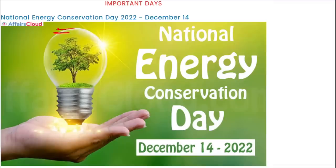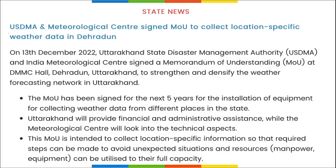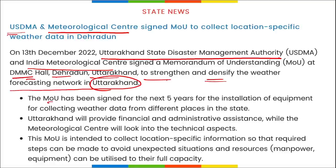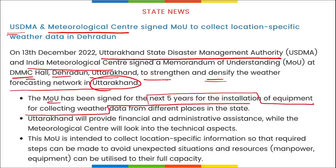National Energy Conservation Day is observed on 14th December. The Uttarakhand State Disaster Management Authority — USDMA — and the India Meteorological Centre — IMC — signed an MOU at the DMCC Hall in Dehradun, Uttarakhand to strengthen and diversify the weather forecast network in Uttarakhand. This MOU has been signed for the next five years for the installation of equipment to collect weather data from different locations across the state.